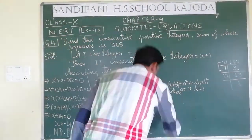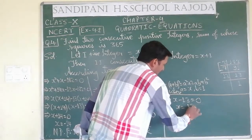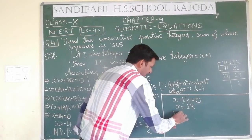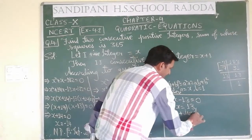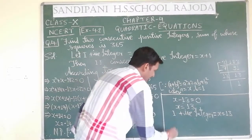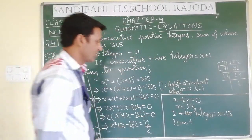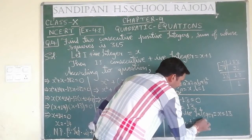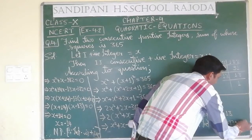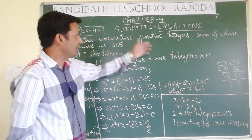Taking the other factor: x minus 13 equals 0, so x equals 13. This is the correct answer. The first positive integer is x equals 13, and the second is x plus 1 equals 14. So 13 and 14 are the two consecutive positive integers that satisfy the condition.